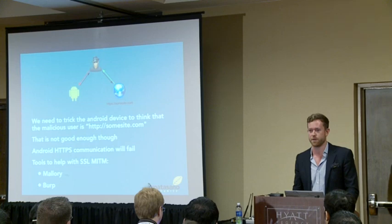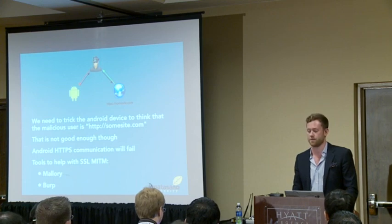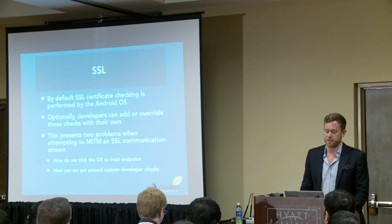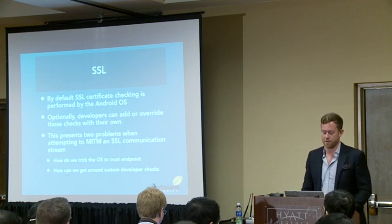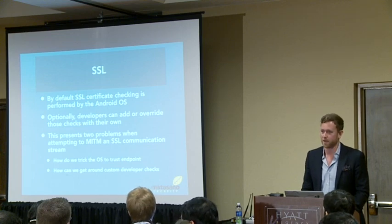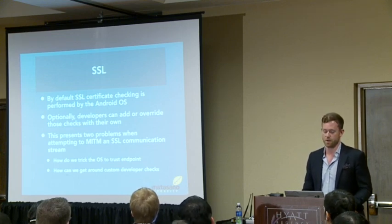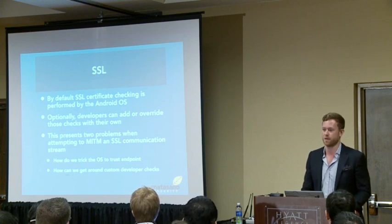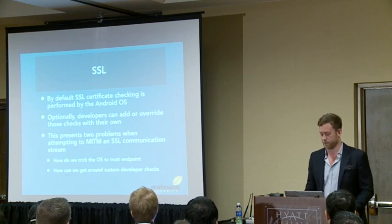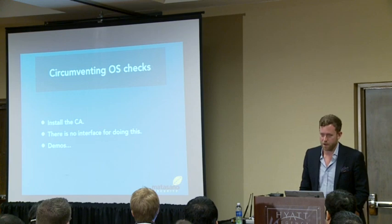Two tools I typically use to do this are Mallory and Burp. Mallory uses IP tables to do a transparent proxy, and Burp I'm sure everyone's used. SSL is handled by the Android operating system; however, there's an option for developers to take control of that negotiation. This presents two problems when trying to gain access to the SSL communication stream: one, how do you convince the operating system to trust the endpoint you're communicating with, and two, if there's a developer check, how do you get around that?